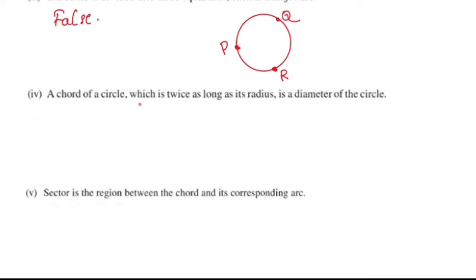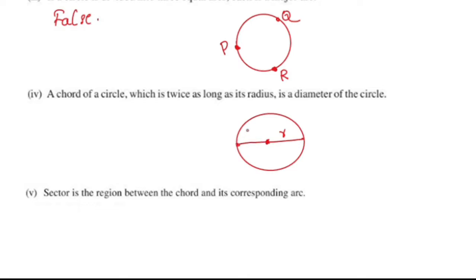Next question: a chord of a circle which is twice as long as its radius is a diameter of the circle. A chord of a circle which is twice as long as its radius is a diameter of the circle. The answer is true.